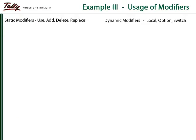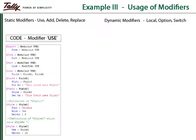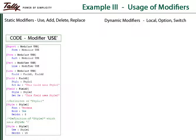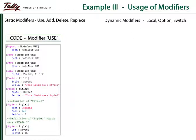Let us see a program which makes use of the modifier 'Use'. In this program, there are two fields which have been assigned two different styles for displaying data by using the style attribute. Two style definitions have been created. The second style definition reuses the first and modifies the value for the height attribute, while the other attributes are inherited as present in the first definition.